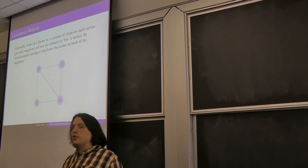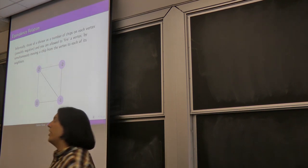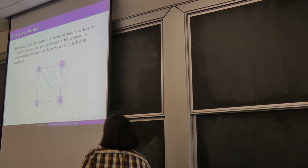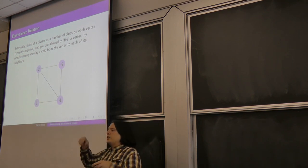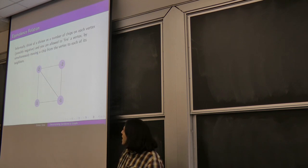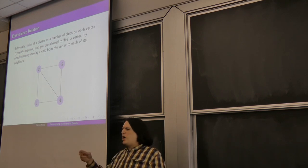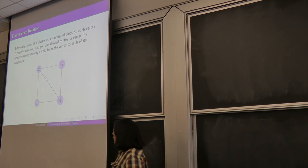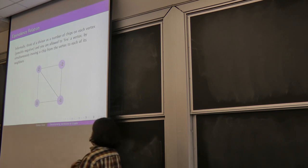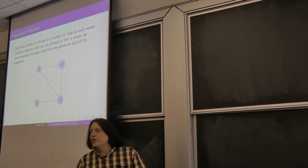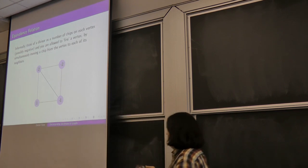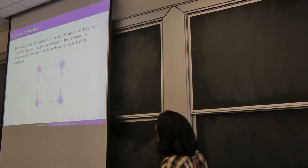This is the equivalence relation: two divisors are equivalent if you can get from one to the other by a series of firings. Borrowing from one vertex is just the same as firing all of the others, so you can just use the firing version.